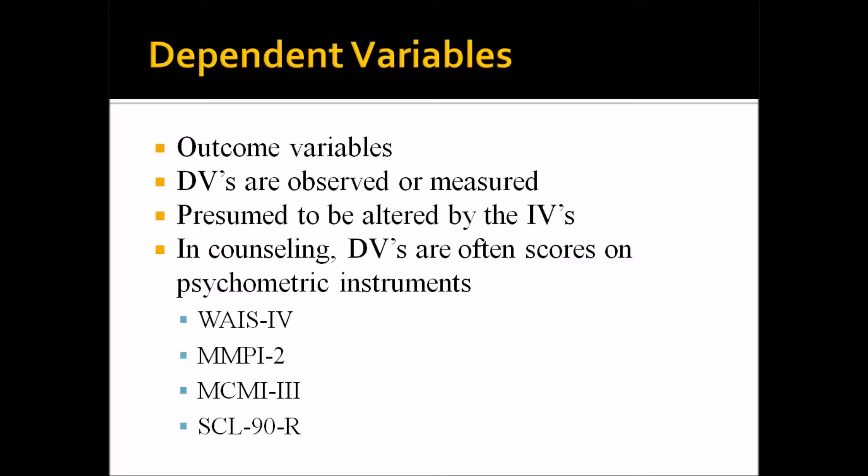You can have more than one dependent variable in a study. These four instruments — the WAIS-4, MMPI-2, MCMI-3, and SCL-90R — all do something a little bit differently. The WAIS-4 is an intelligence test, the MMPI-2 is a personality inventory, the MCMI is used for diagnosing, and the SCL is a symptom checklist. All four could still be administered in one study. It's also relatively common to have more than one independent variable.